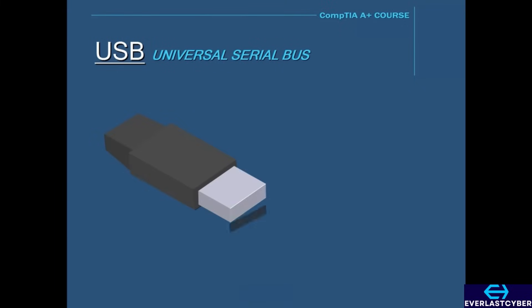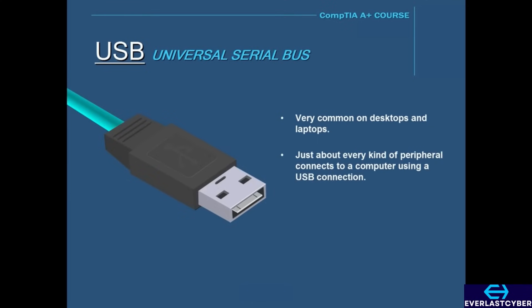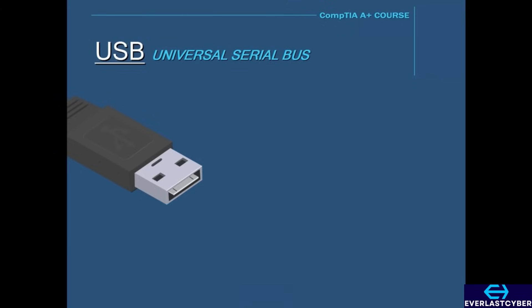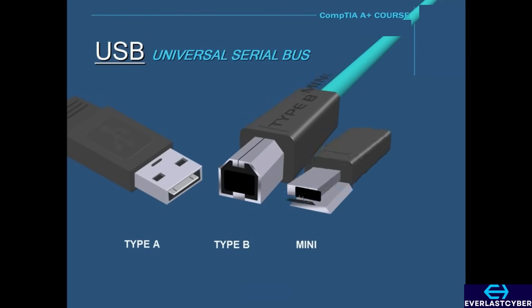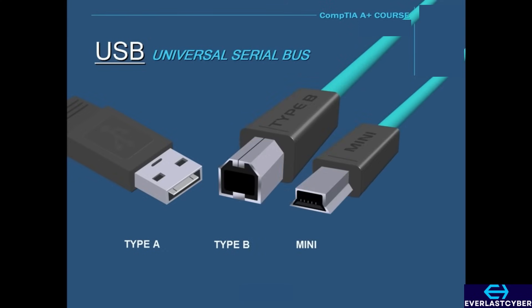This is a USB connector. The USB is very common on desktops and laptops. Many manufacturers make wireless network cards that plug into a USB port. The USB has two different connector types: Type A and Type B. We also have the USB Mini and USB Micro.